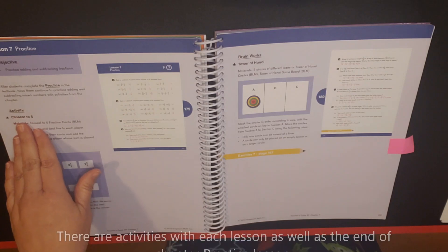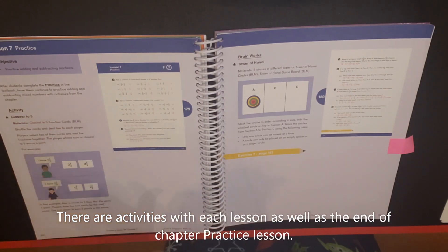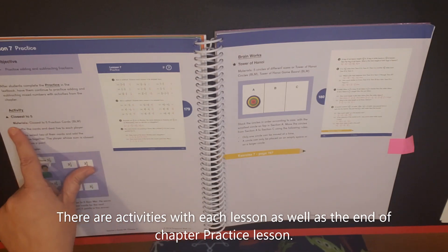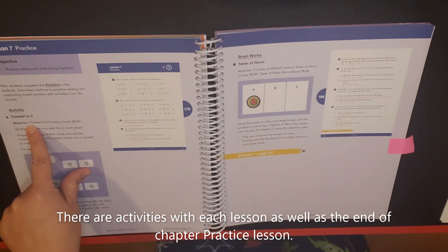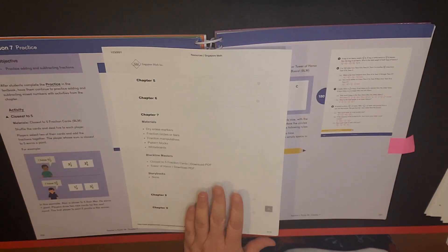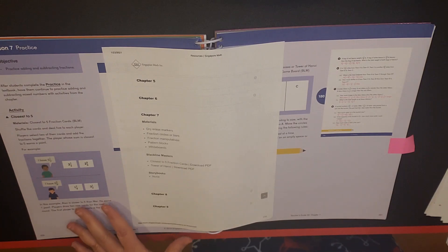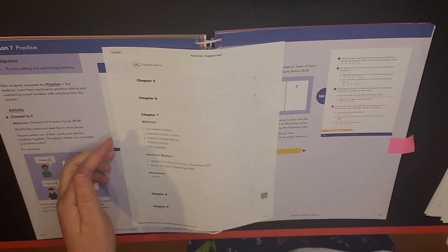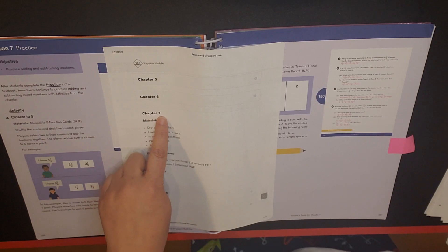So this is additional practice with regards to our fractions and we have an activity. So you always have at least one activity in this practice section. And for this activity, it says that we need the closest to five fraction cards.